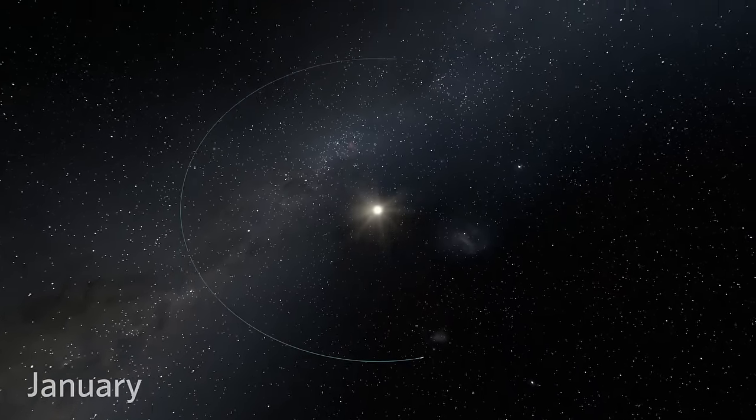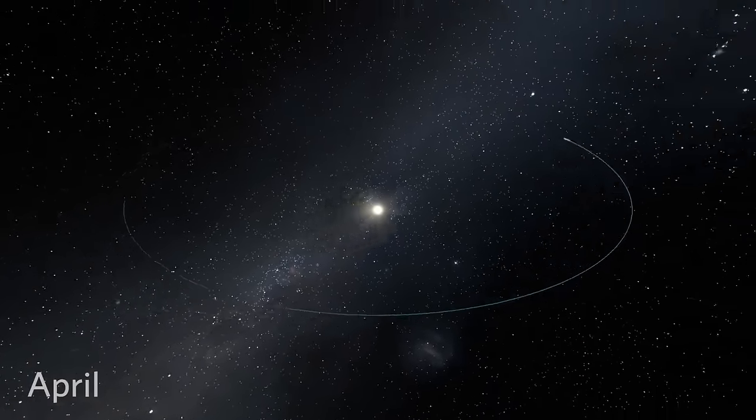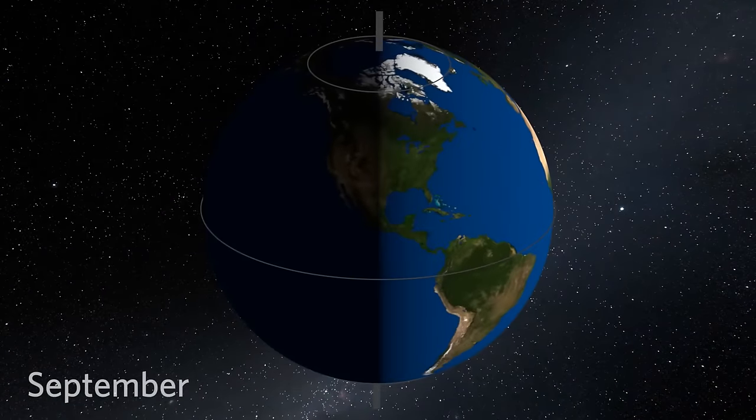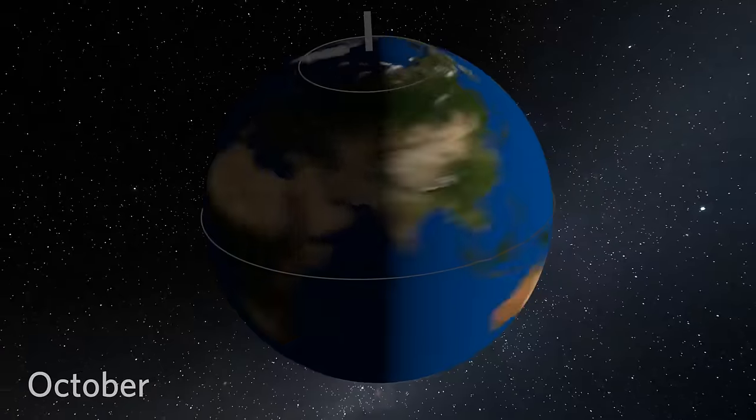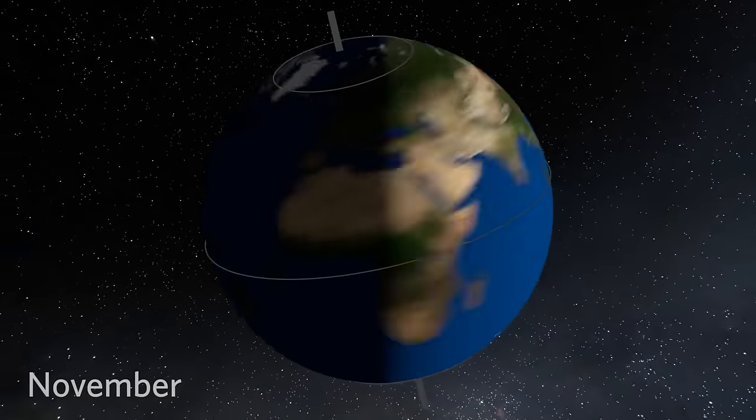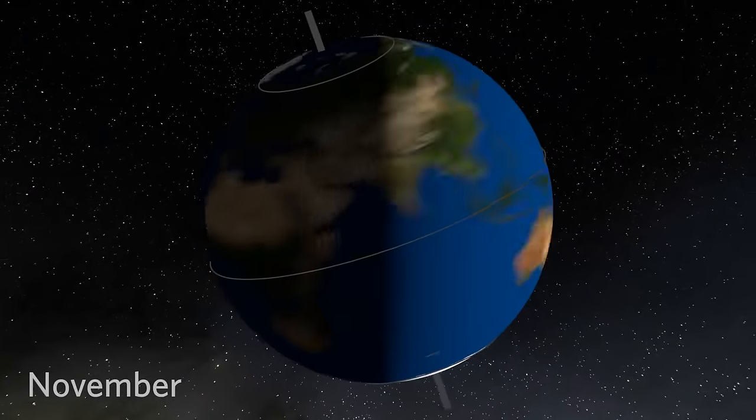Earth also rotates like a slightly tilted spinning top. Earth remains tilted in the same direction all year round as we orbit the Sun. But that means the Sun's light shines differently on Earth at different times of the year.